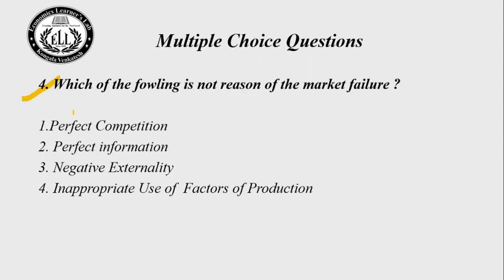Question number 4, the last question: Which of the following is NOT a reason for market failure? Choice 1: Perfect competition. Choice 2: Perfect information. Choice 3: Negative externality. Choice 4: Inappropriate use of factors of production. The right answer is choice number 2 — perfect information. Perfect information will not lead to market failure; imperfect information will lead to market failure.